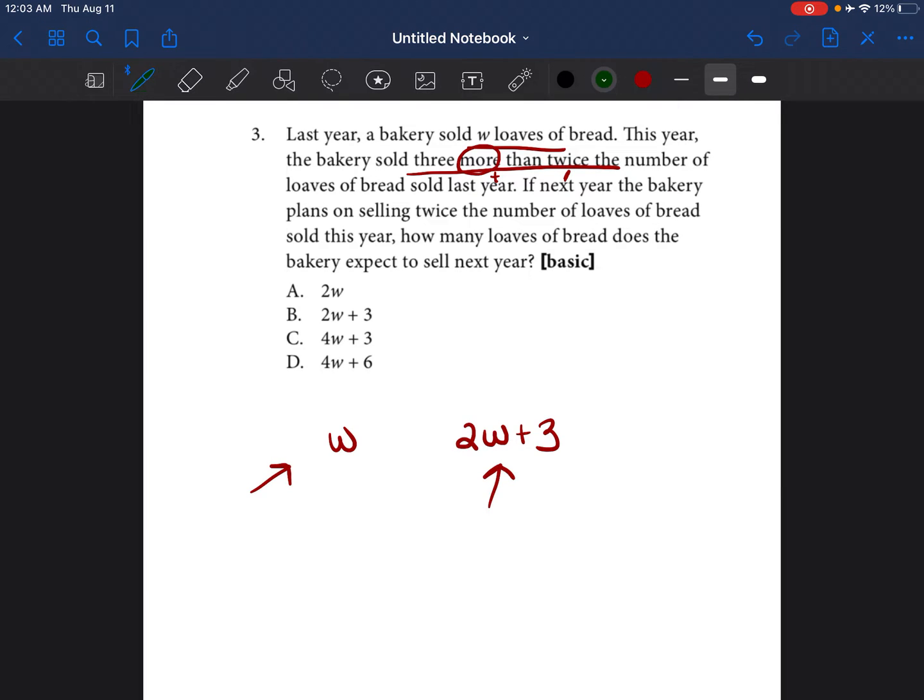And then it says if next year the bakery plans on selling twice the number of loaves from this year, then how many do they expect to sell next year? So we just have to do two times the entire value of what was sold this year, which is 2W plus 3.